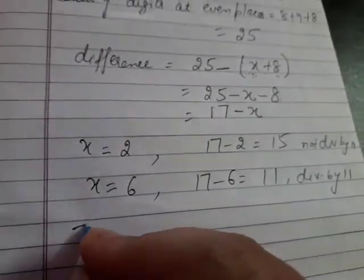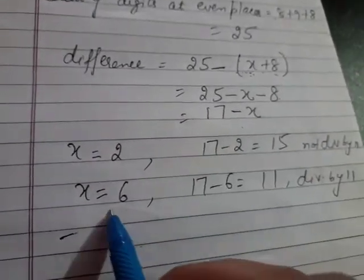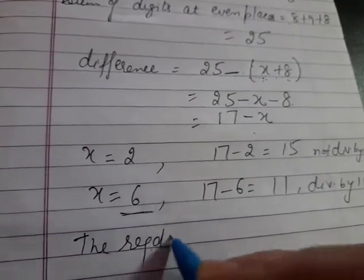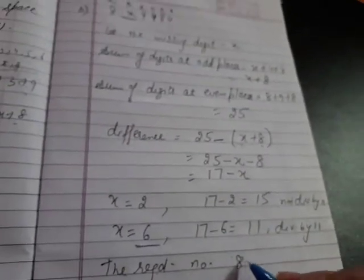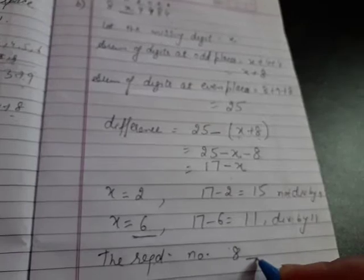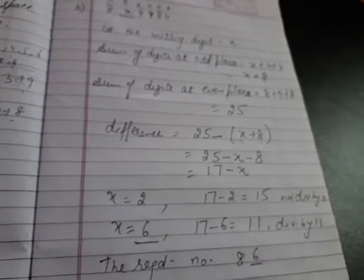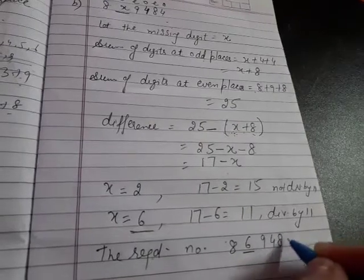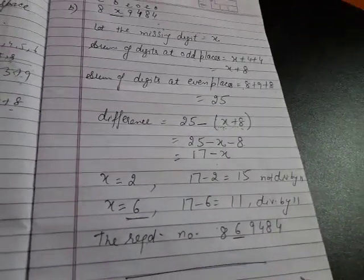So this means, in place of x what will we put? 6. So the required number is, what will your number become? 8, 6, 9, 4, 8, 4. This is our answer.